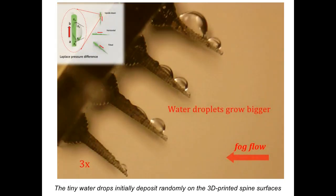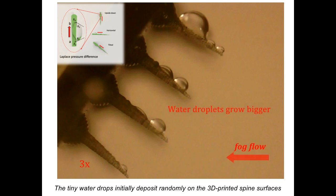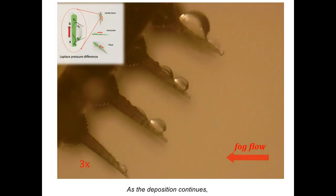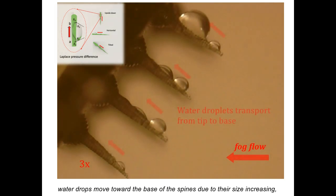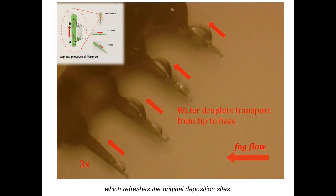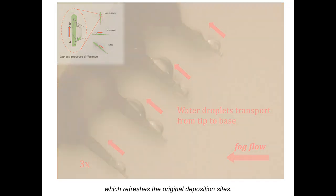The tiny water drops initially deposit randomly on the 3D-printed spine surfaces. As the deposition continues, water drops move toward the base of the spines due to their size increasing, which refreshes the original deposition sites.